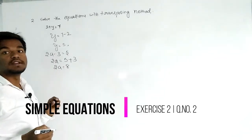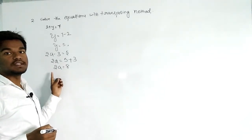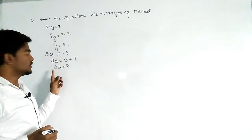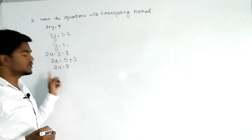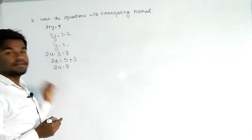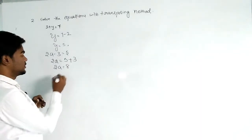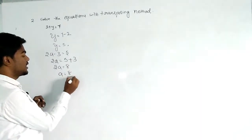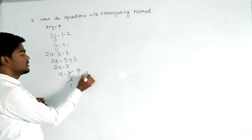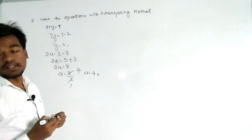Here, before a, the number 2 is under multiplication. After shifting 2 to the right side, multiplication will become division. So 2a = 8, then a = 8 ÷ 2, which gives a = 4.